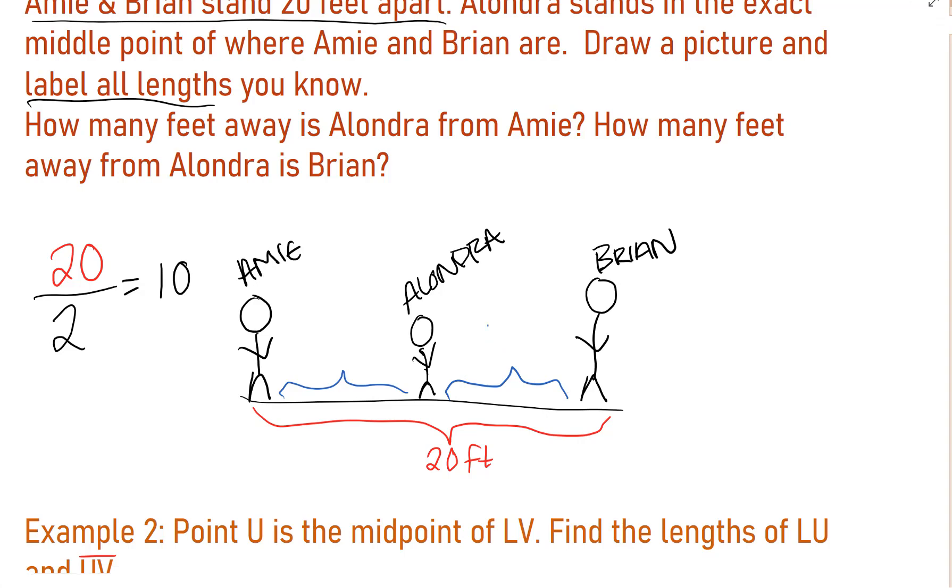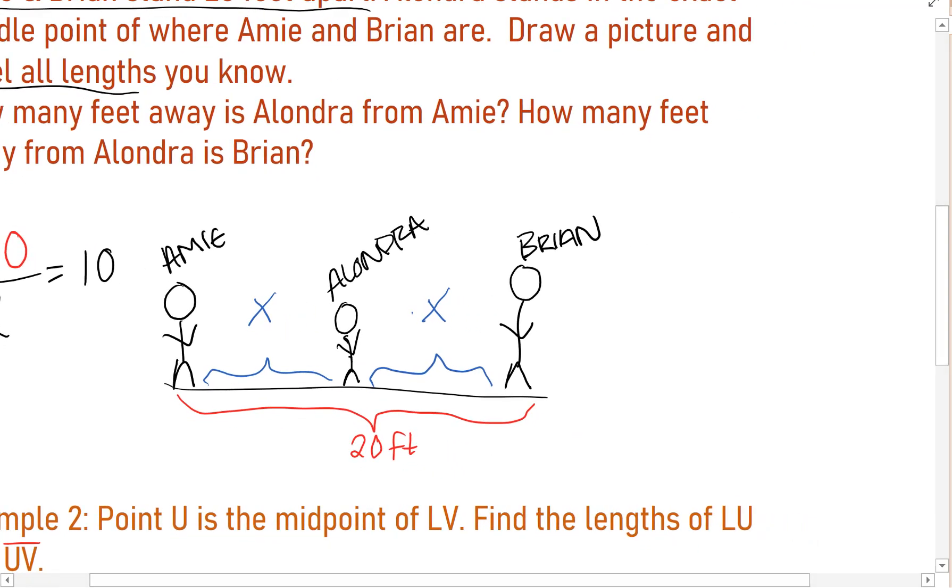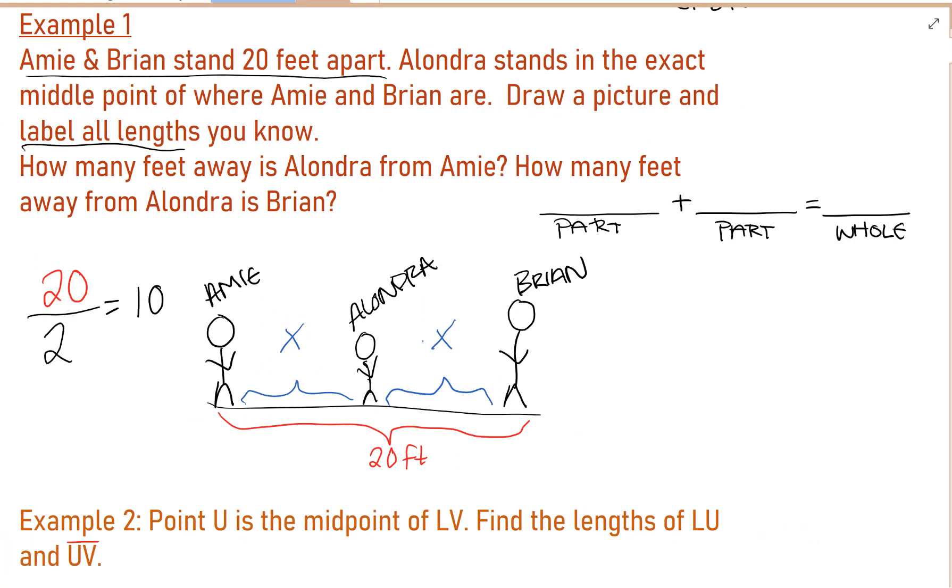We could also use an equation like we did with line segment addition. So we don't know the distance from Amy to Alondra. Let's pretend. And we don't know the distance from Alondra to Brian, but we know that they are the same. So I'm going to choose a variable X. And if the distance from Amy to Alondra is X, then I already know the distance from Alondra to Brian is also X. So in order to complete the equation, part plus part equals whole.